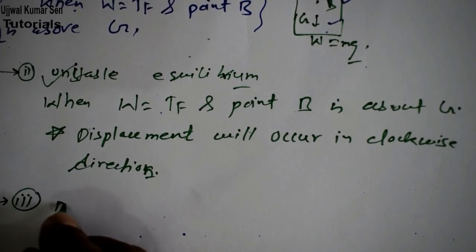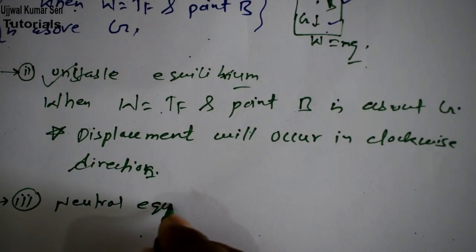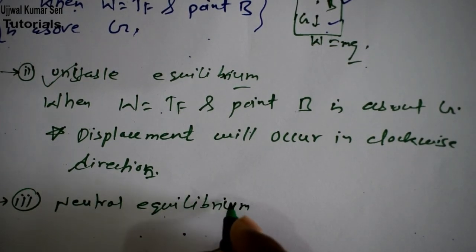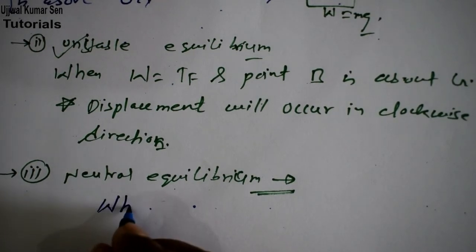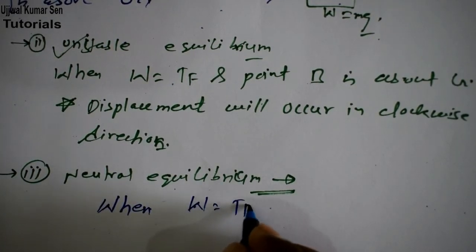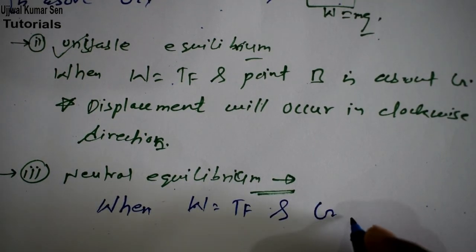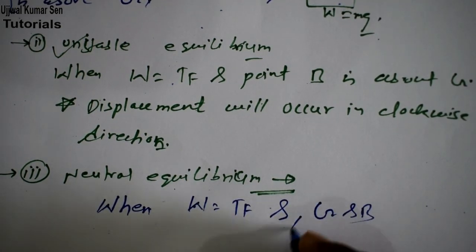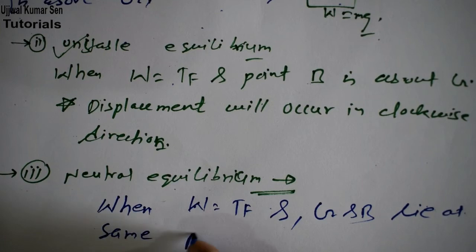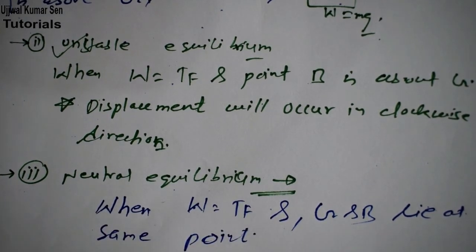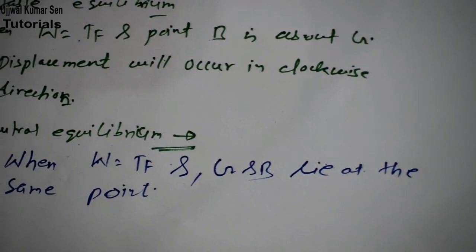The last case is neutral equilibrium. In this case, W is equal to TF, and G and B lie at the same point. When this condition is met, we can say the body is in neutral equilibrium.